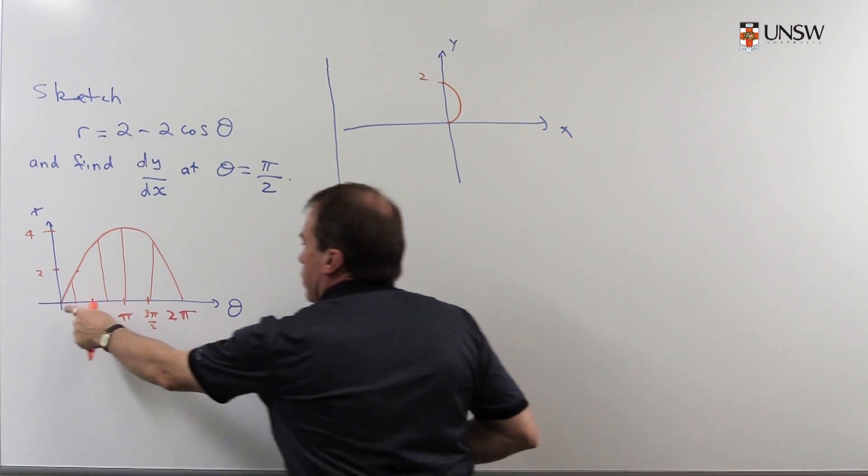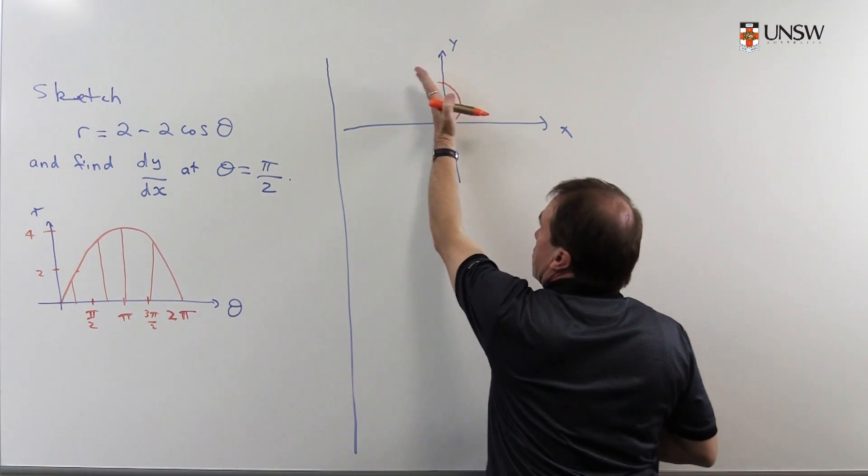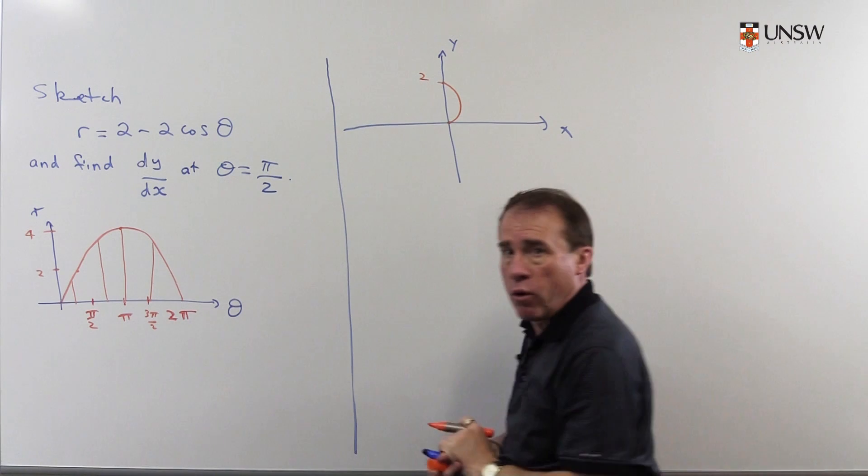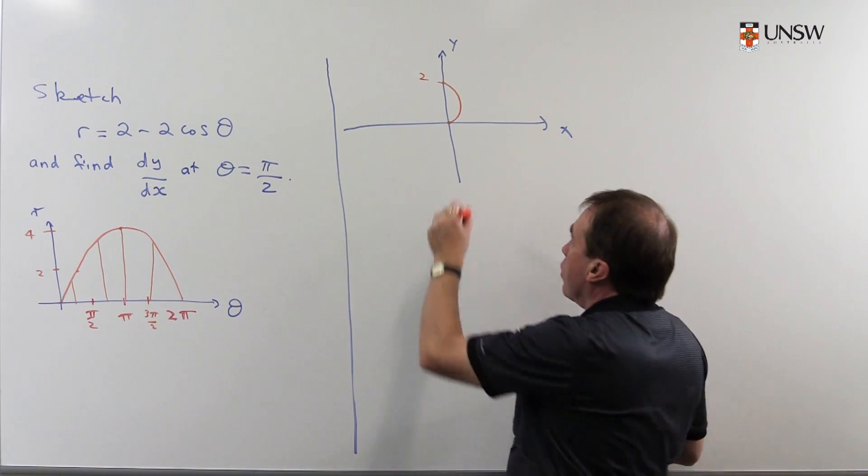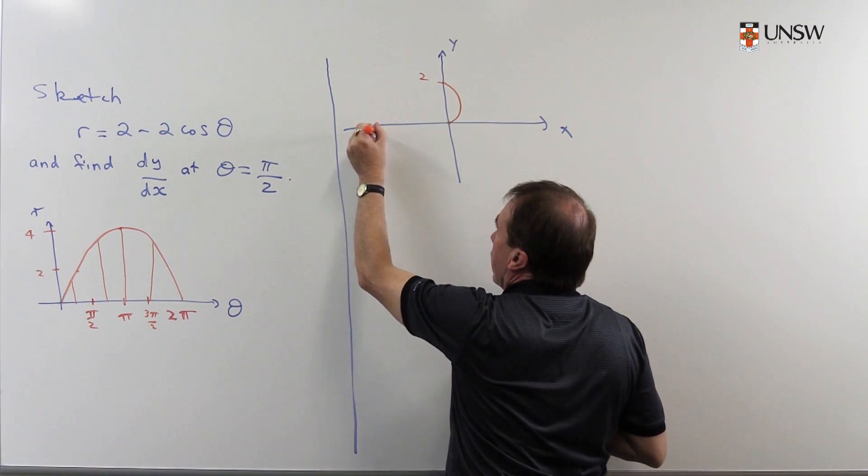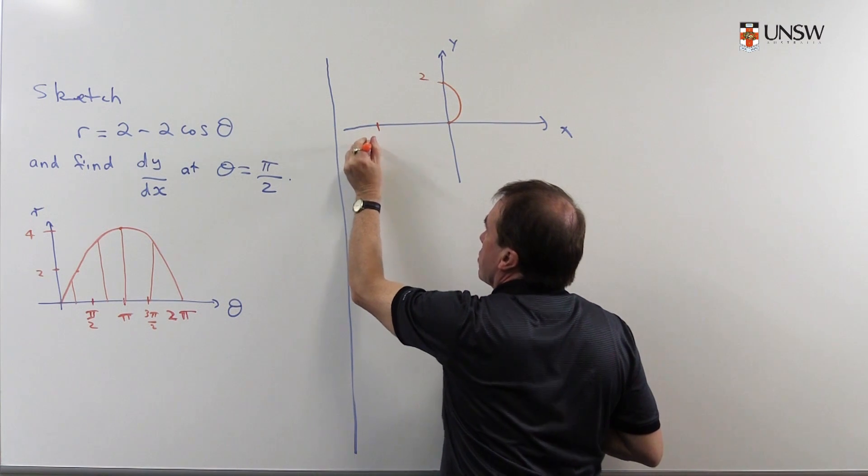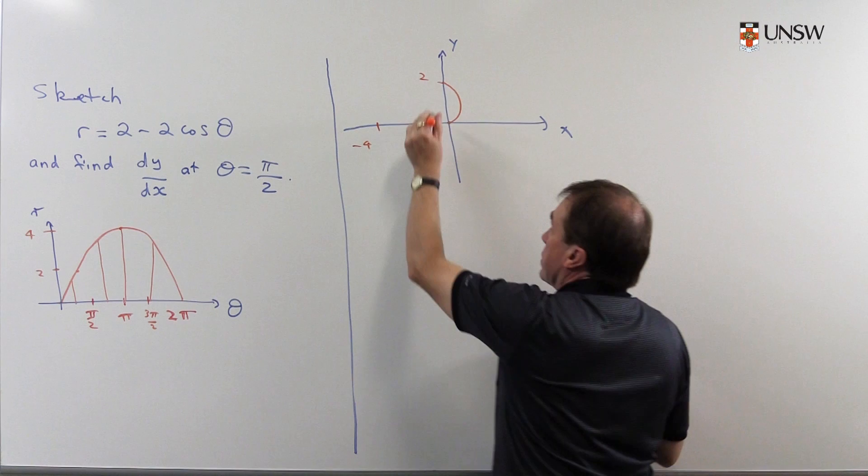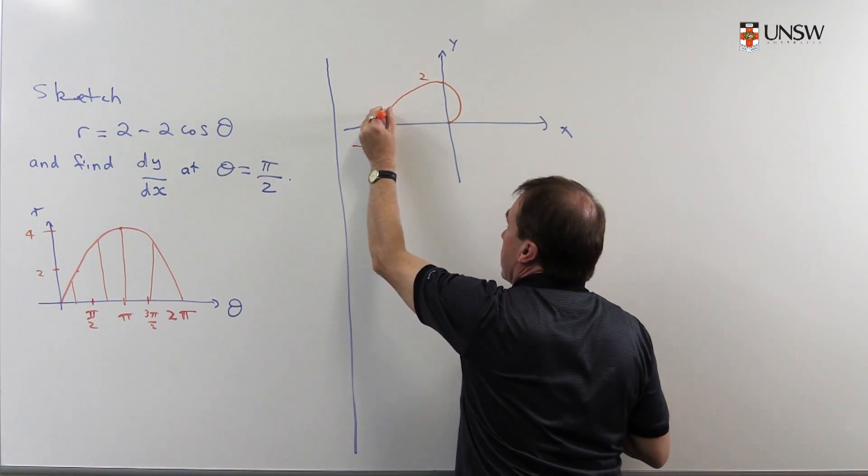As I move around to π, as I rotate around there, the r value goes all the way up to 4. But at π this is going to be 4 units out from the origin, so this will be the point -4 on the x-axis. So around it comes to here like this.